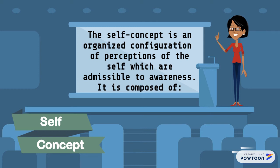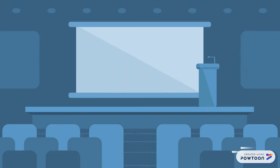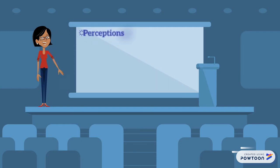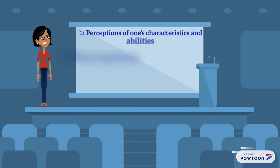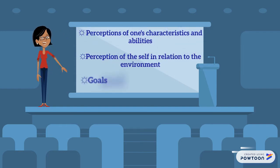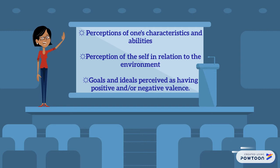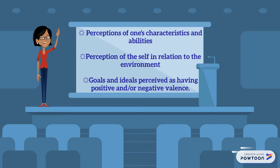It is composed of perceptions of one's characteristics and abilities, perception of the self in relation to the environment, and goals and ideals perceived as having positive and/or negative valence.